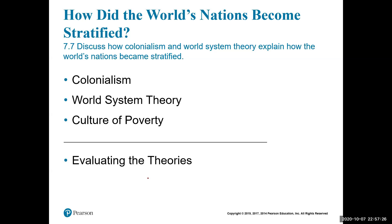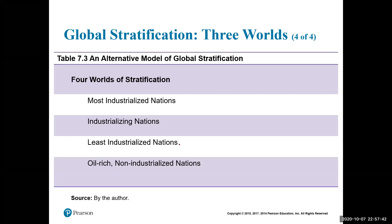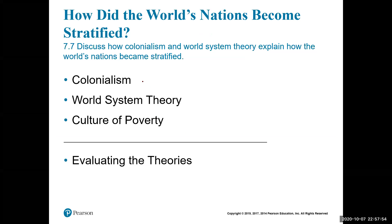Colonialism is the process by which one nation takes over another, usually to exploit its labor and natural resources. Industrialized nations want to take over least industrialized nations — land that can be improved and used for income generation. They exploit the labor and natural resources of that area. This is usually accomplished through war.